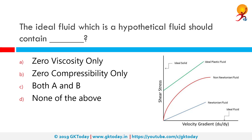The ideal fluid, which is a hypothetical fluid, should contain both zero viscosity and zero compressibility. In physics, a perfect fluid is a fluid that can be completely characterized by its rest frame mass density and isotropic pressure. Real fluids are sticky and contain heat, whereas perfect fluids are idealized models in which these possibilities are neglected.